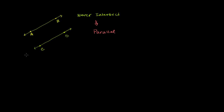If we drew our coordinate axes here, they would intersect at a different point, but they would have the same exact slope. Now I want to think about how angles relate to parallel lines. We can say that line AB is parallel to line CD. Sometimes you'll see it specified on geometric drawings with a little arrow to show that these two lines are parallel, or a double arrow to show that this line is parallel to that line.